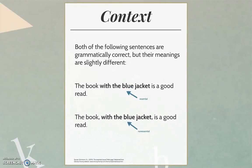Often, it is tough to tell whether a word group is restrictive or non-restrictive without seeing it in context and considering the writer's meaning. The sentence 'the book with the blue jacket is a good read' sounds and looks fairly similar in the following examples, which is why you need to look at the context of these sentences to understand the meaning.